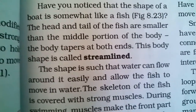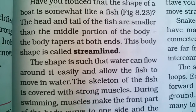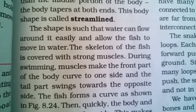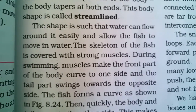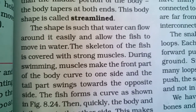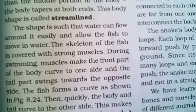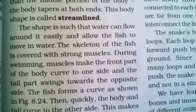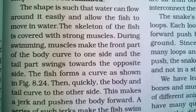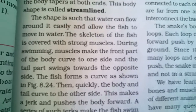This body shape is called streamlined. The shape is such that water can flow around it easily and allows the fish to move in water. The skeleton of the fish is covered with strong muscles. During swimming, muscles make the front part of the body curve to one side and the tail part swings towards the opposite side.